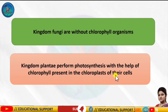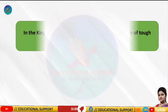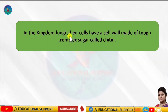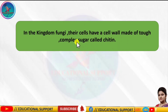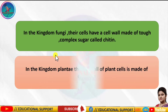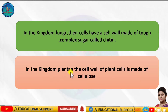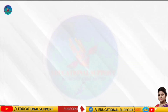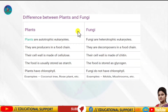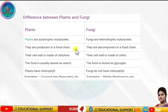The next point is that in kingdom fungi, their cells have a cell wall made of a tough complex sugar called chitin, and in kingdom plantae, the cell wall of plant cells is made of cellulose. Here you can see the overall difference between plantae and fungi.